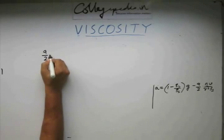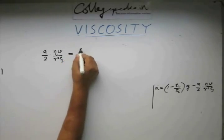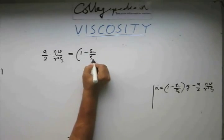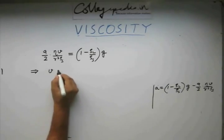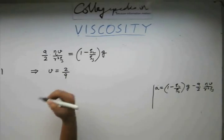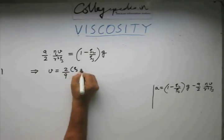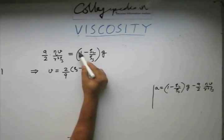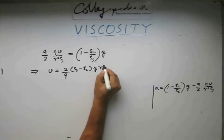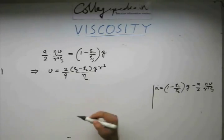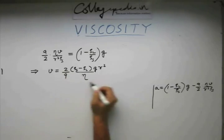If we equate it to zero, we have this equaling (1 - ρl by ρs) times g. From here, we get this velocity to be 2 by 9 times (ρs - ρl). This ρs multiplies here and this cancels this ρs here. This times g times r² divided by η.